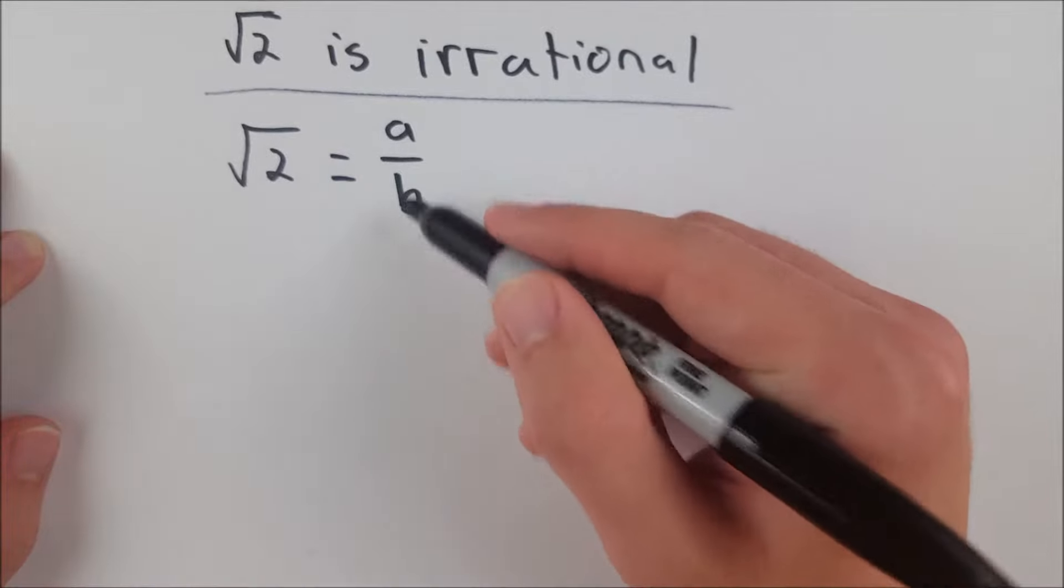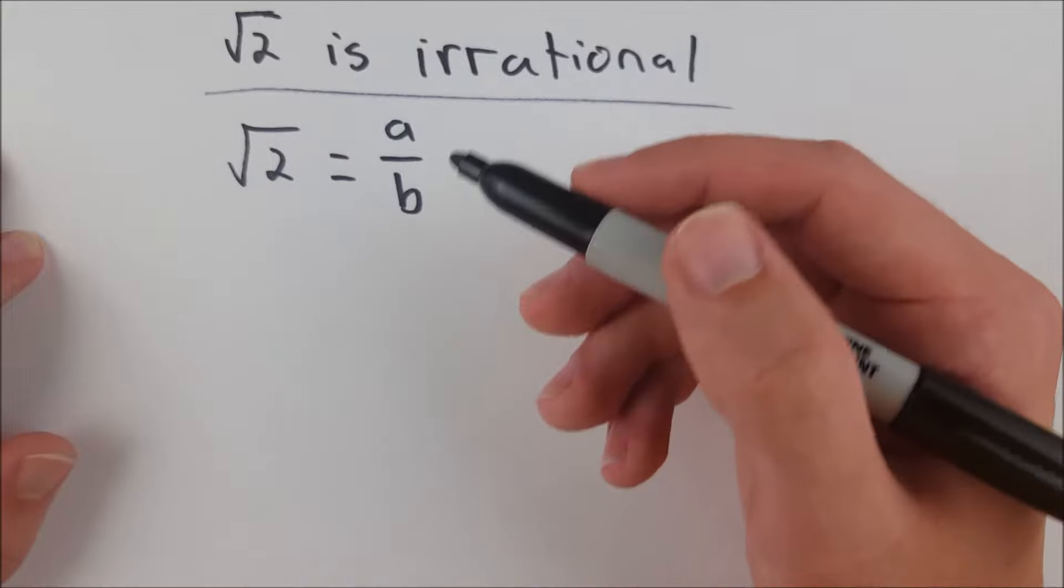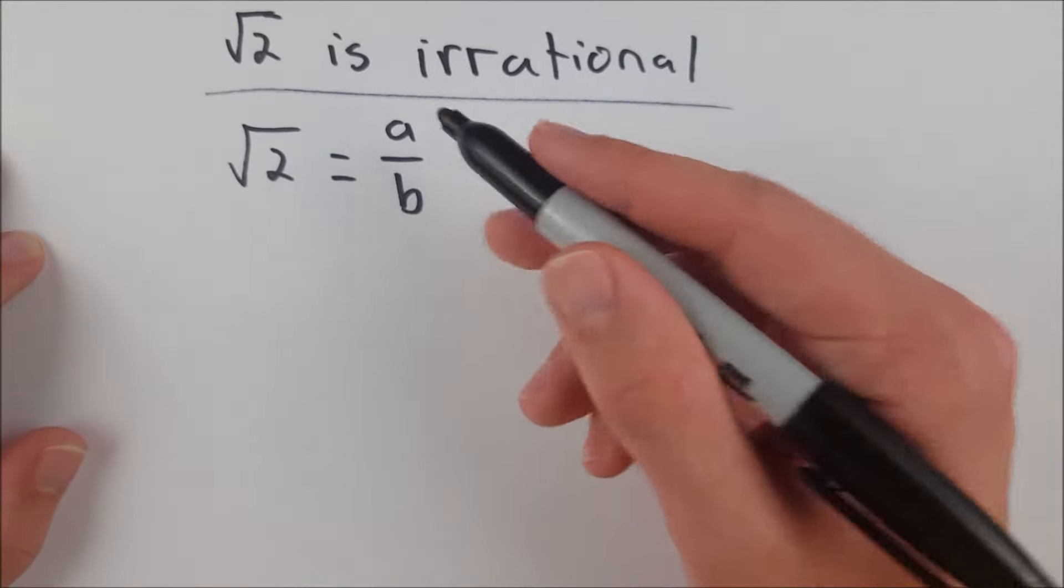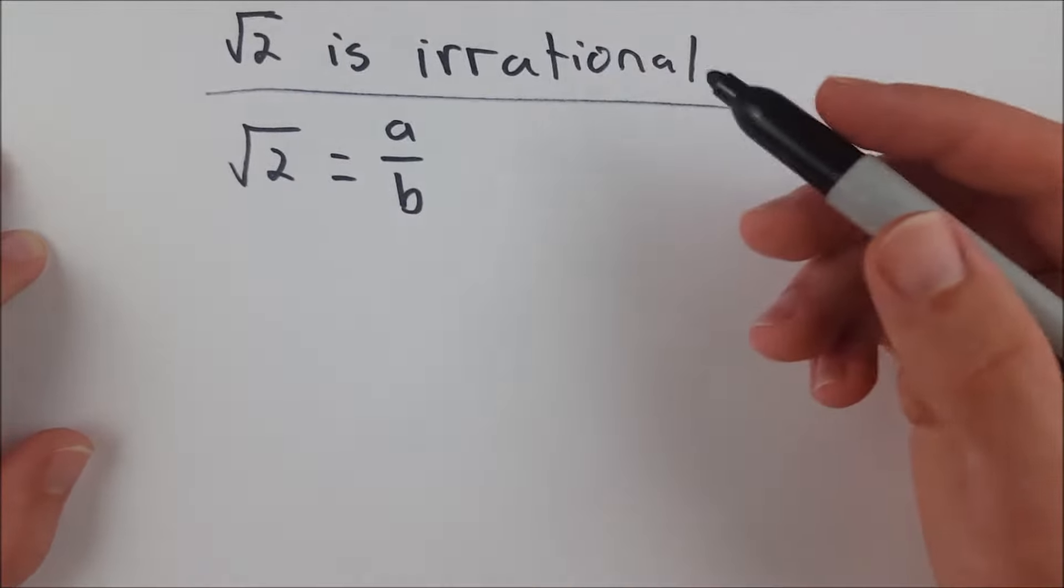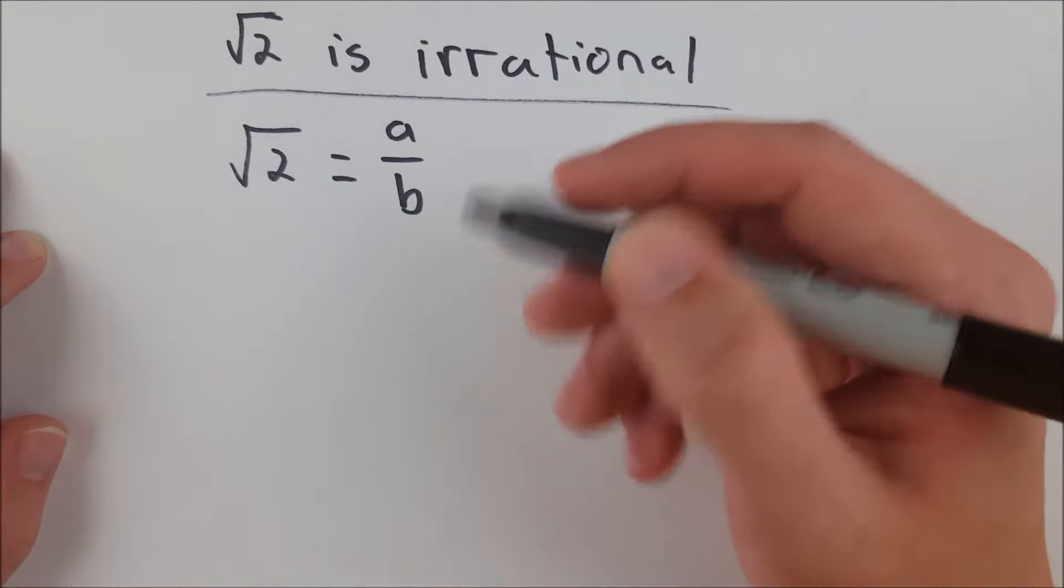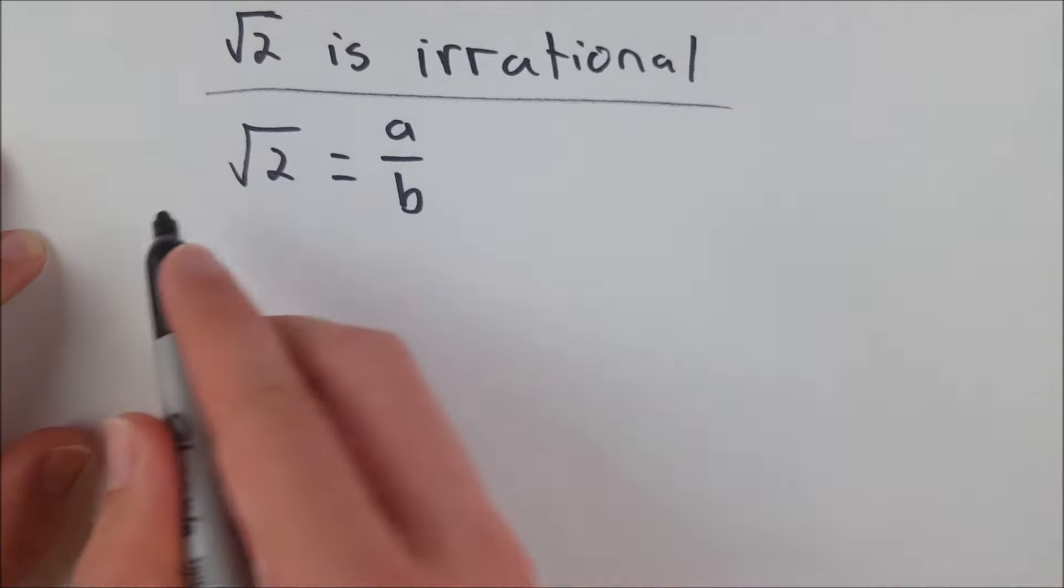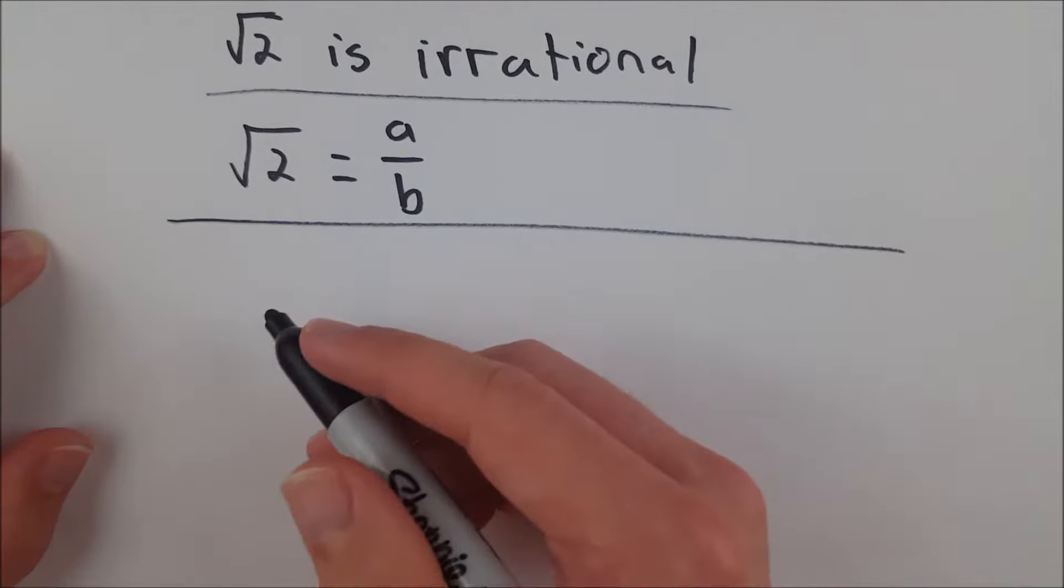Let's also assume that this fraction a over b is in its lowest terms, which means that a and b are relatively prime, which means that a and b have no common factors. So in other words, a and b can't both be even because they would have common factors of 2. It's in its lowest terms. So with that out of the way let's move on.